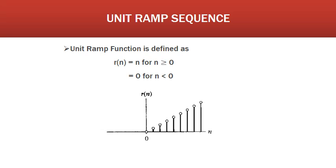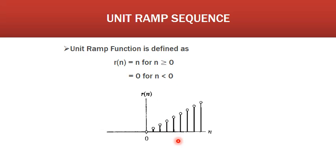The next standard discrete time signal is the unit ramp sequence, denoted by r(n). It is defined as r(n) = n for n ≥ 0, and 0 for n < 0. The figure shows the discrete time unit ramp sequence. From this figure it is clear that when n > 0 the signal exists, and when n < 0 the signal does not exist — the value of the signal is 0 when n < 0.